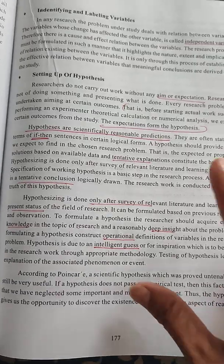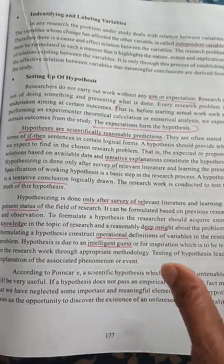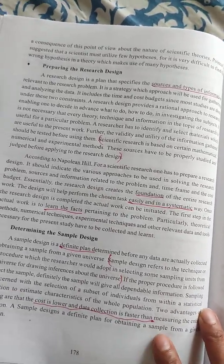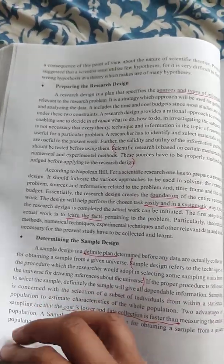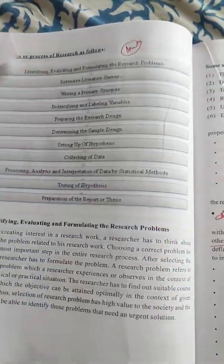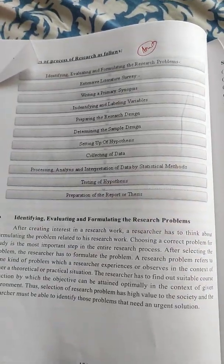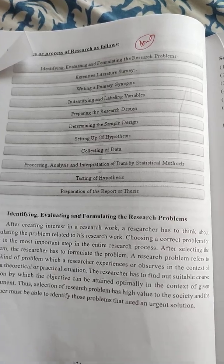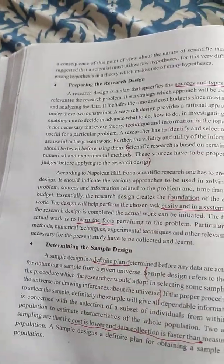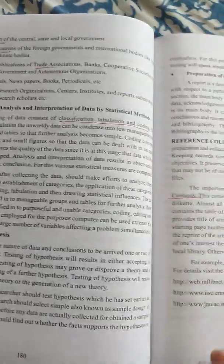Setting up of hypothesis — the hypothesis question is compulsory. It covers different types of hypothesis. The stages and process of research include all the following points: setting up of hypothesis, collecting data, preparing research design, and sample design.